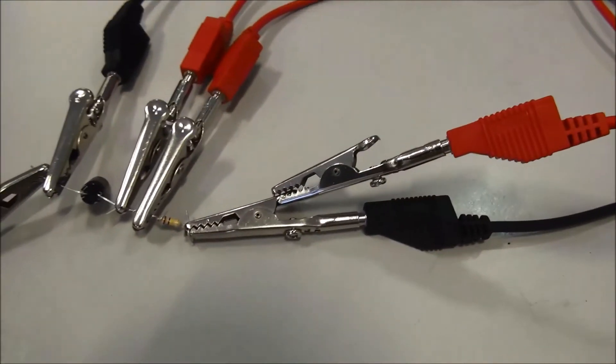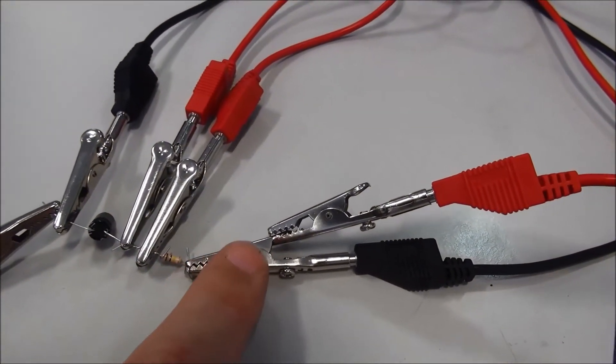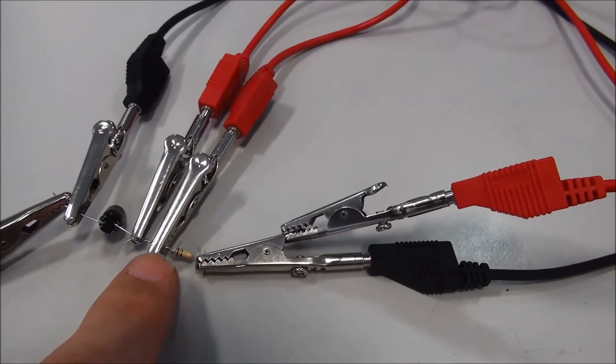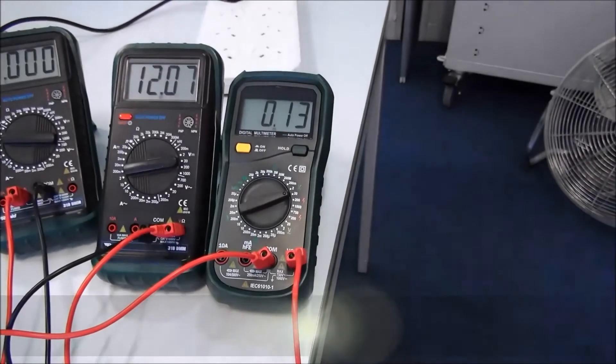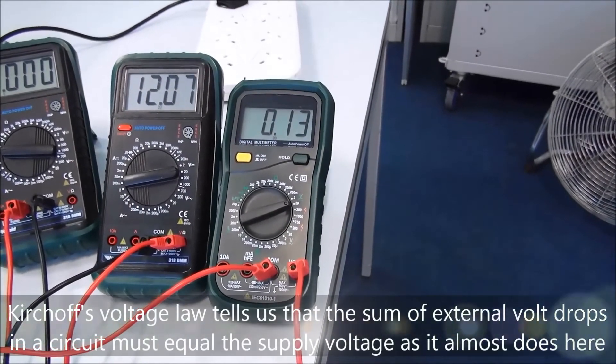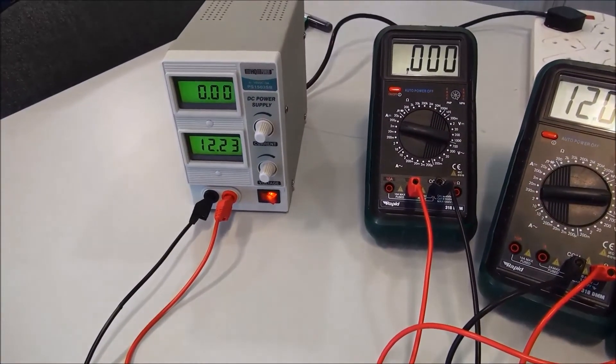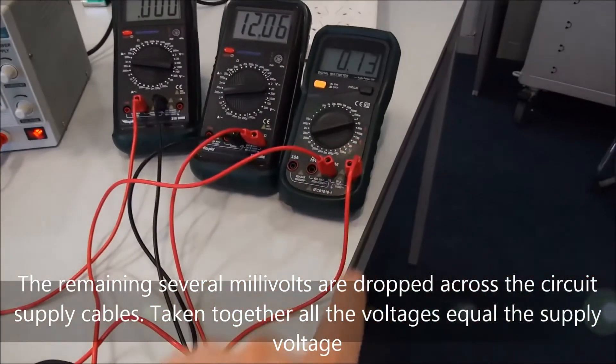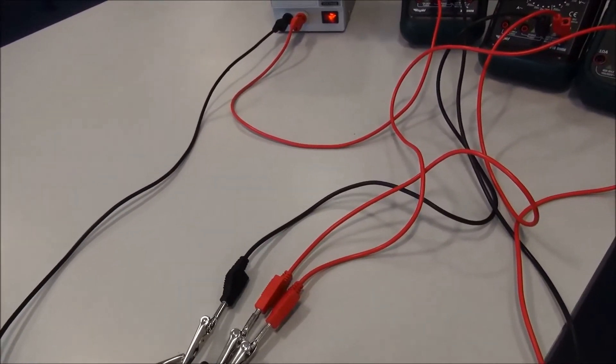So we have one here, which is the positive port, and this is the negative port there. And together, when we add up both voltages, you can see that they pretty much equal the supply voltage of about 12.23. Any extra voltage will be dropped across the leads themselves. Very little extra voltage there.